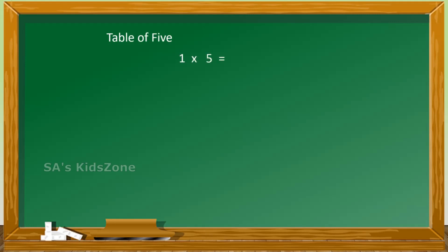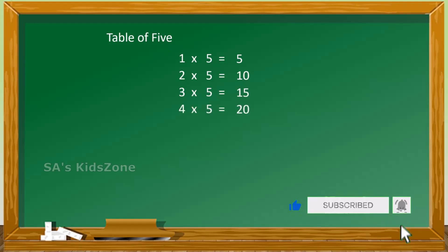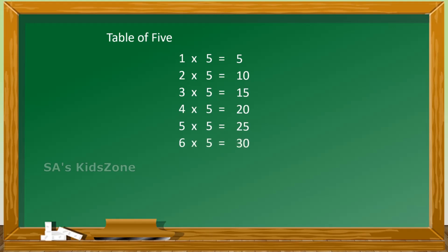The next is table of 5: 1 five is 5, 2 fives are 10, 3 fives are 15, 4 fives are 20, 5 fives are 25, 6 fives are 30, 7 fives are 35.